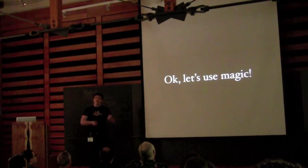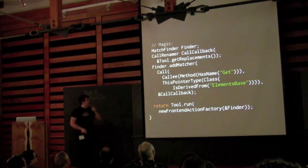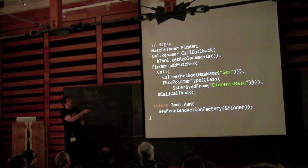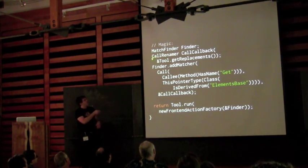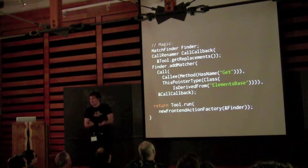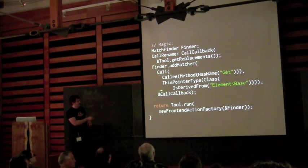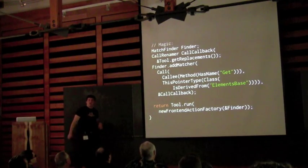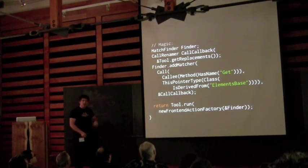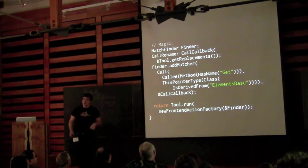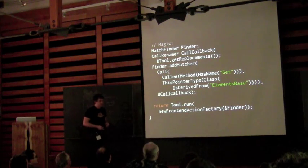Now we've got some magic. Let's use it to implement the rest of our tool — plugging our matcher into where we had that ellipsis. We need a MatchFinder, which holds all the trees of matcher predicates active in the system. We need a callback called CallRenamer to actually do something when we discover a match. Then we add a matcher — we give it the exact matcher we wrote up and the callback to take action. We hand this MatchFinder into the tooling infrastructure, which runs the matcher over all the ASTs in each translation unit and collects all the results.